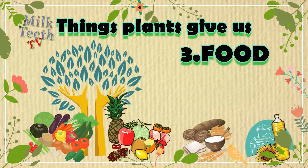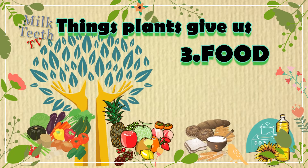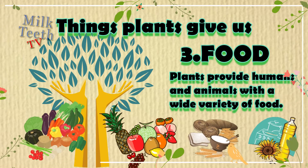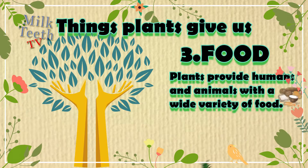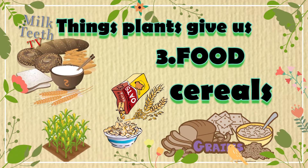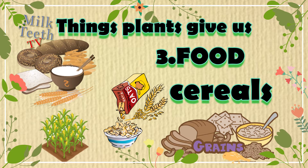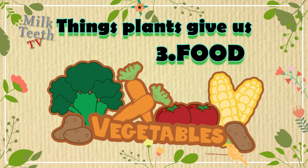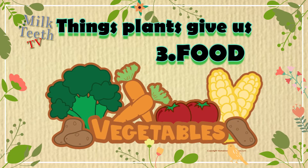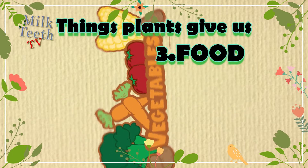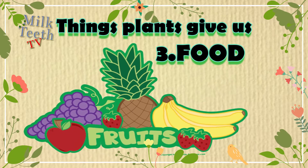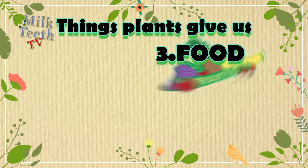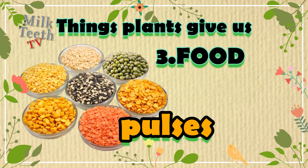Number three: food. The most important thing that plants provide us with is our food. Plants provide humans and animals with a wide variety of foods. In food we get items like cereals — wheat, oats, maize, and rice — vegetables like broccoli, carrots, tomatoes, and potatoes, and fruits like apple, strawberry, grapes, bananas, and pineapple.